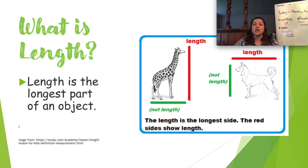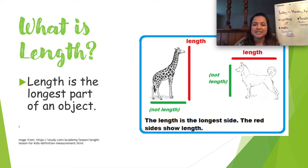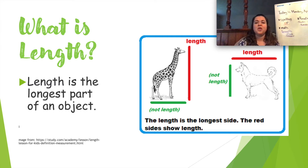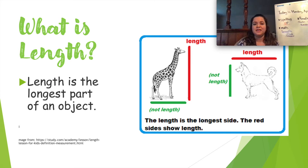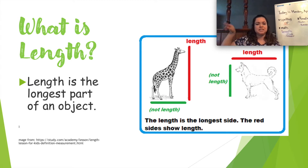Today we're going to learn about length. What is length? Length is the longest part of an object. If you look at the picture, you will see there's a giraffe and there's a dog. The red line is showing length — length is always the longest side. For the dog, we would be looking from the nose to the tail to find the longest side, and that would be its length.